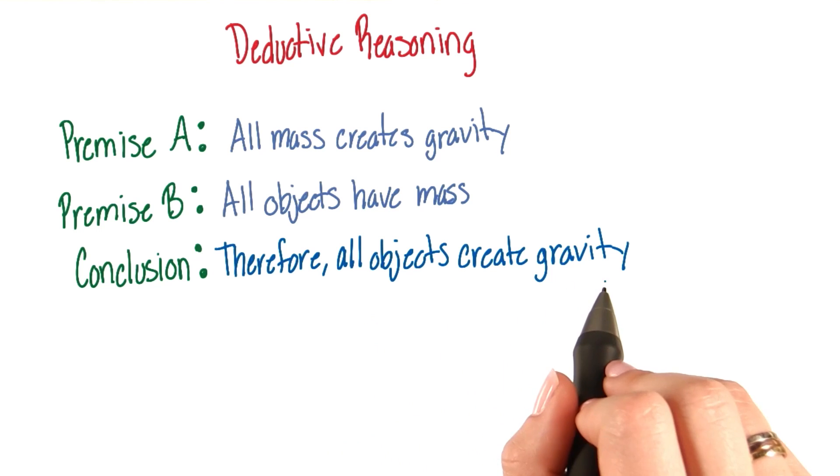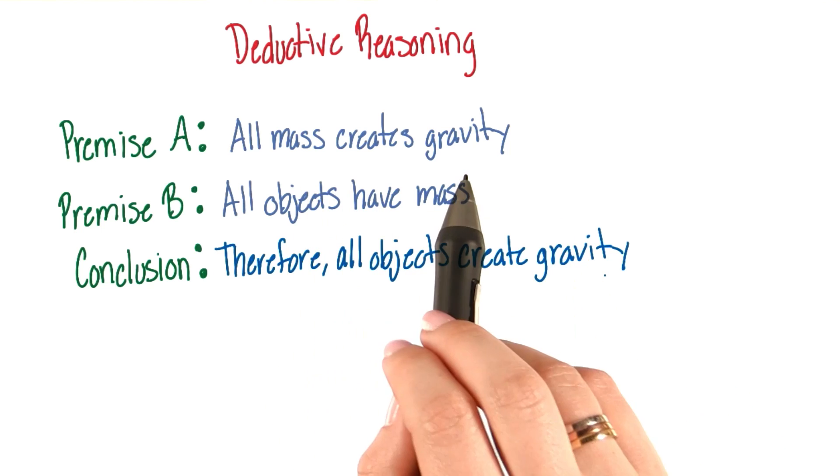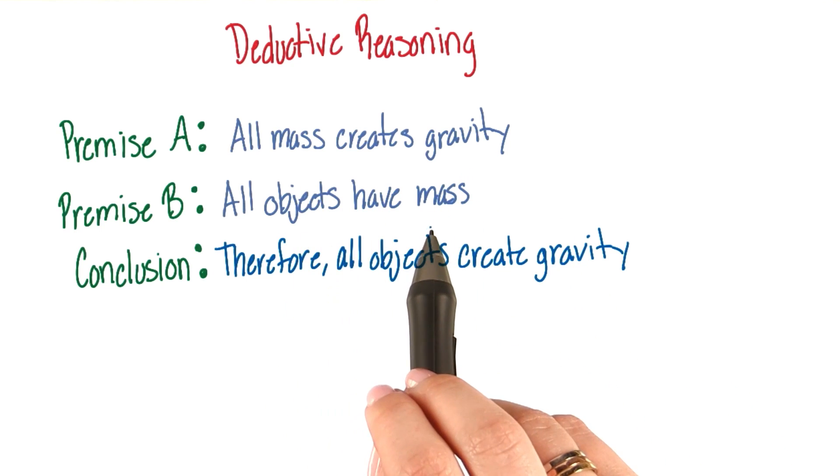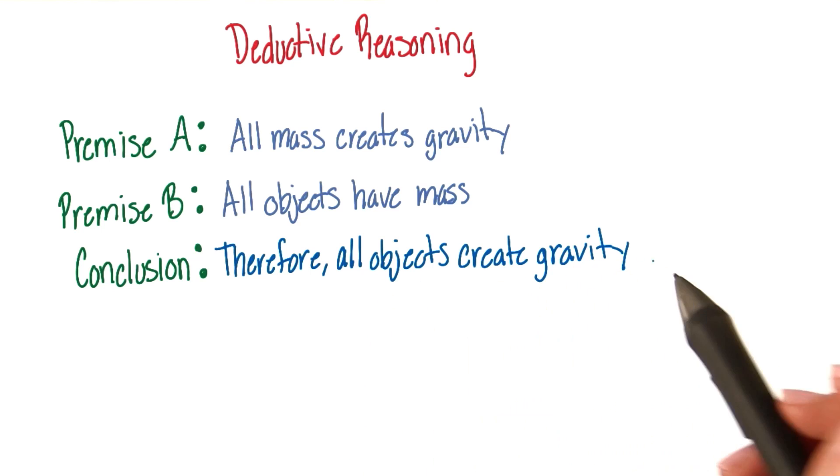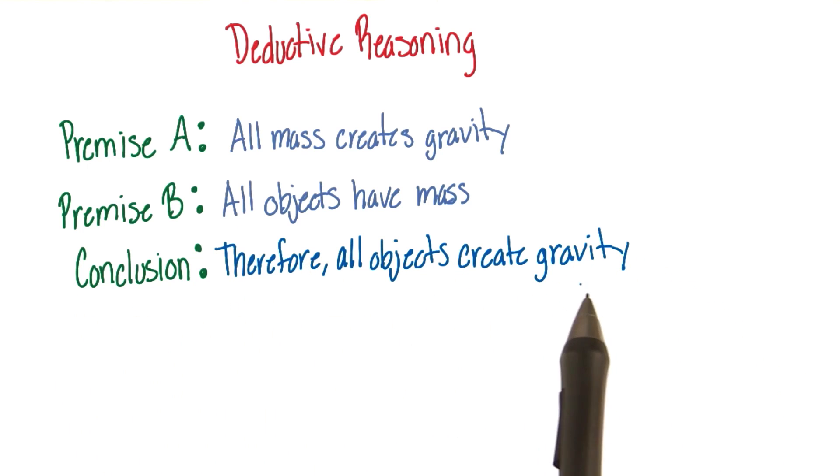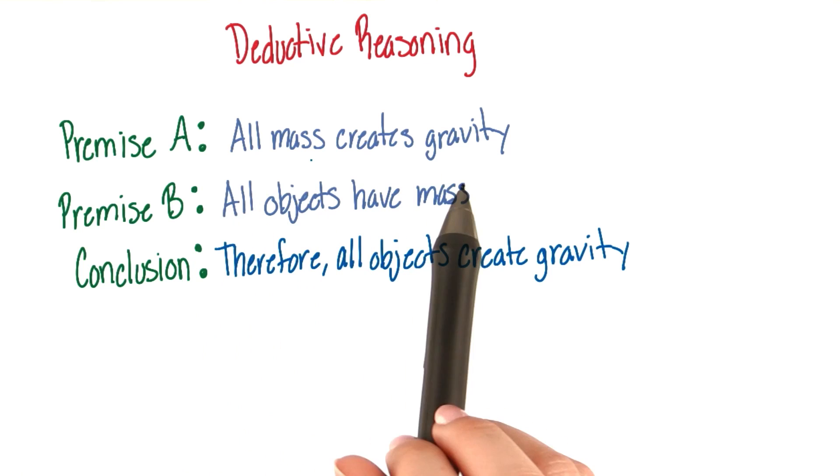Therefore, all objects create gravity. Because if all mass has gravity and all objects have mass, then they must create gravity. Notice that the logical conclusion has to be true if the two premises are true.